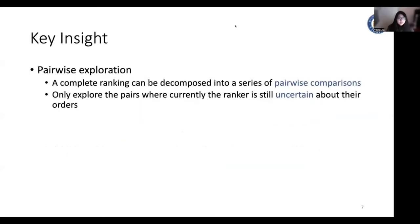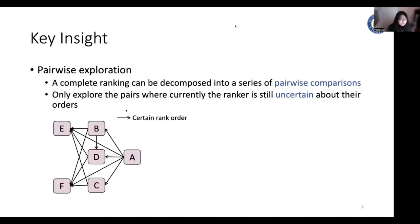In this work, we propose a pairwise exploration ranking policy for online learning to rank. Our key insight is for any ranking, it can be decomposed into a series of pairwise comparisons. And we only need to explore the pairs where currently the ranker is still uncertain about their orders. For example, assuming we have six documents and the documents are connected with some certain rank orders, which means that the model is certain about the preference between any two documents between these connected documents. And in this example, we have three uncertain rank orders and we only need to perform the exploration on these three uncertain rank orders. For all the other certain rank orders, we only need to exploit the estimated pairwise preference.